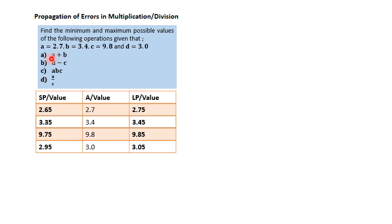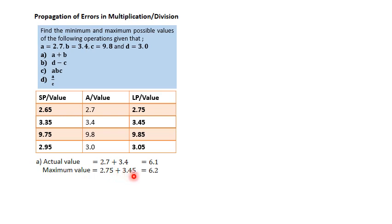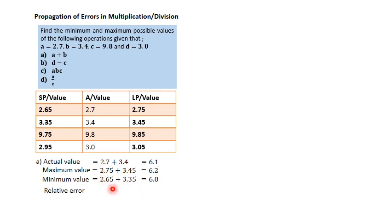Part A: a plus b. Since a is 2.7 and b is 3.4, the actual value is 2.7 + 3.4 = 6.1. The maximum possible value is 2.75 + 3.45 = 6.2. To get the largest possible value you use the bigger values of each. The minimum value is the opposite: 2.65 + 3.35 = 6.0. The relative error is (maximum − actual) ÷ actual = (6.2 − 6.1) ÷ 6.1 = 0.016.